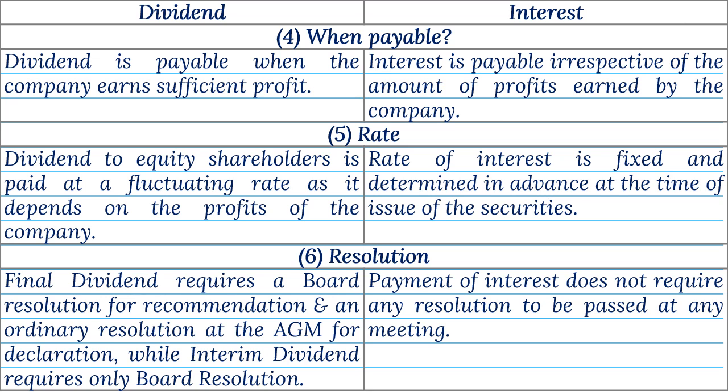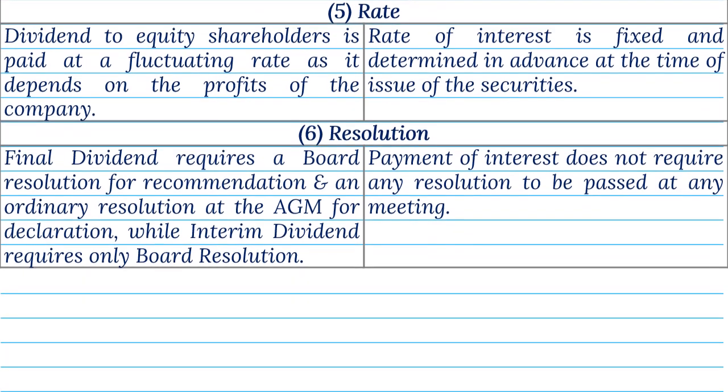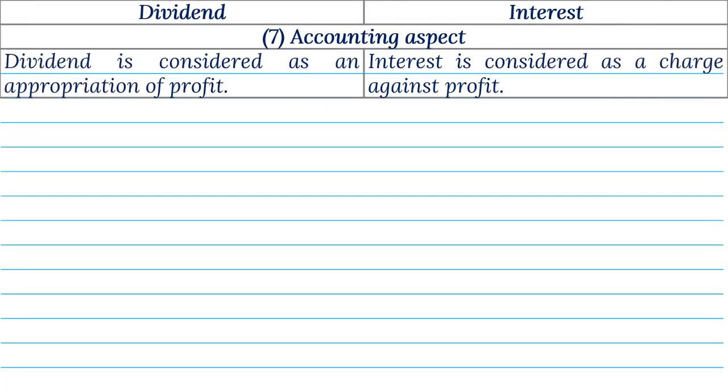Point 6 — Resolution: Final dividend requires a board resolution for recommendation and an ordinary resolution at the AGM for declaration, while interim dividend requires only a board resolution. Payment of interest does not require any resolution to be passed at any meeting. Point 7 — Accounting Aspect: Dividend is considered as an appropriation of profit. Interest is considered as a charge against profit.